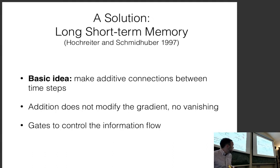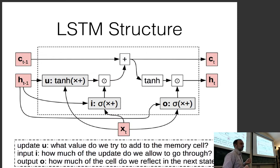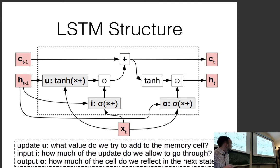LSTMs use gates to control information flow while learning. The most important part of the LSTM is the additive connection between the previous cell state and the next cell state, which ensures no vanishing gradients — gradients from the current cell get passed directly back to the previous cell and can flow all the way through the entire sentence. The LSTM paper is worth reading; it's a little hard to understand at first, but once you do, it makes a lot of sense.